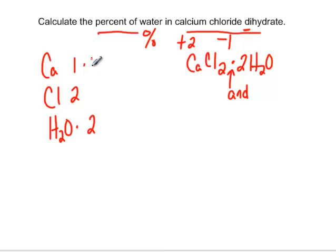So calcium, if you look on the periodic table, you'll figure out its molar mass is 40.1. If you look on the periodic table for chlorine, one of them is 35.5, except we have two of them in the formula. So that's going to be 71.0 grams.